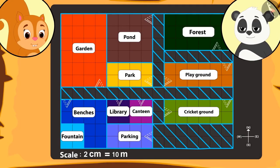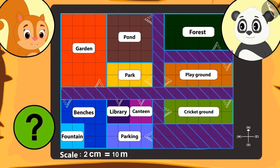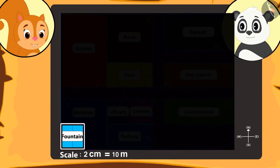Chanda tells Golu that she can spot roads everywhere — there is at least one road near every place. Golu tells her there is one place besides which there is no road. Can you find that place on the map? That's right — there is no road near the pond.